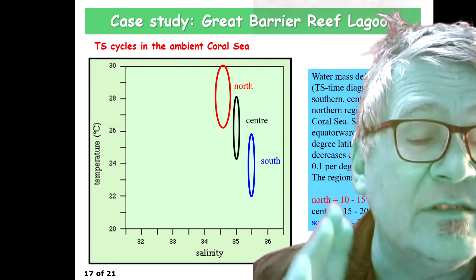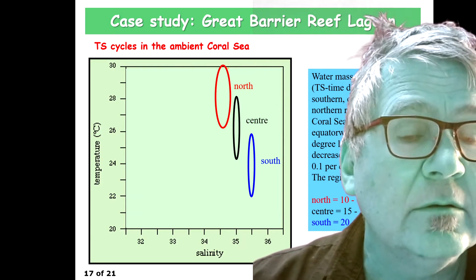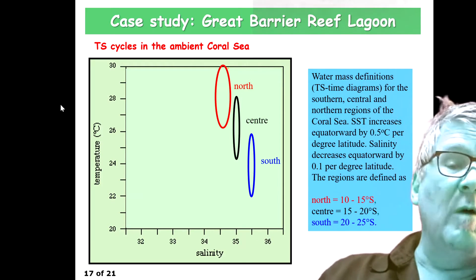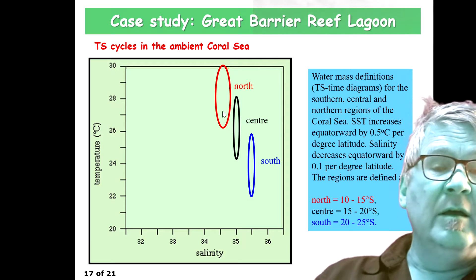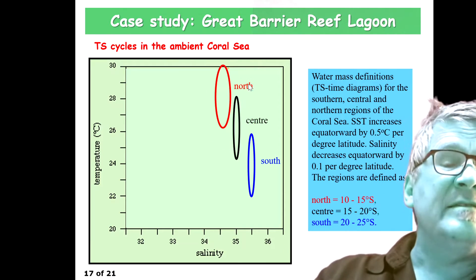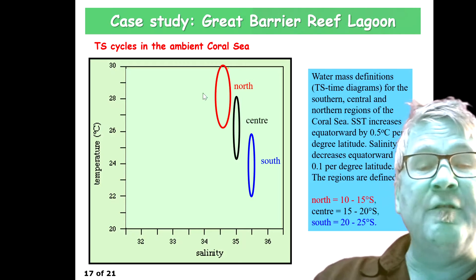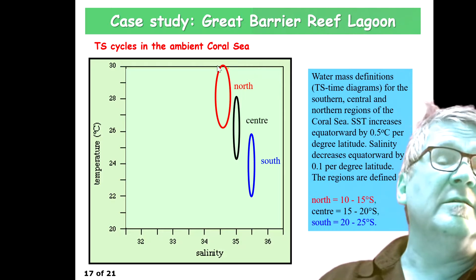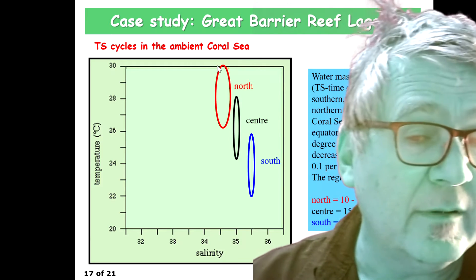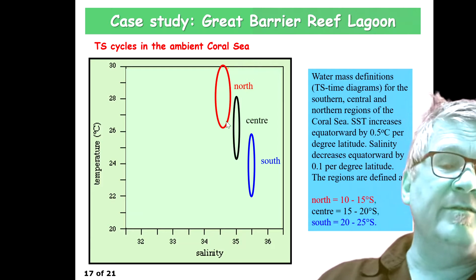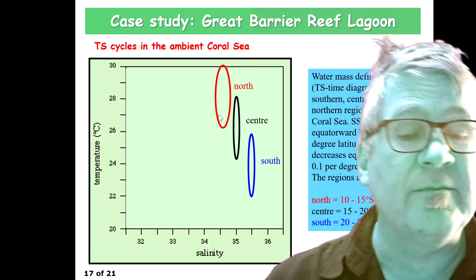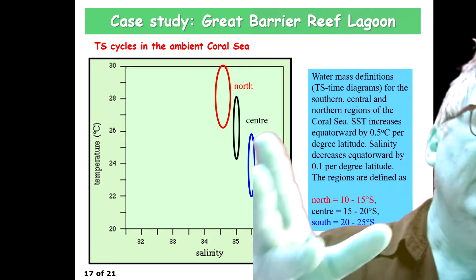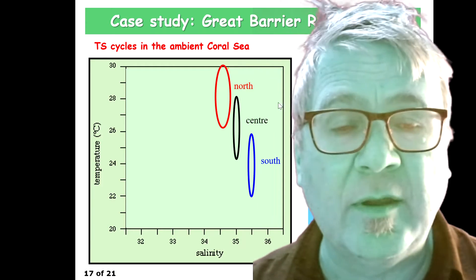What's shown here is the seasonal cycle, which is why you have ellipses. You have one for the northern region, which we define as the latitude band between 10 and 15 degrees south. You get a temperature cycle here — warmest at 30 degrees, coldest at 26 — and also some variation in salinity. Overall, the salinity is lower than in central and southern parts of the Great Barrier Reef.